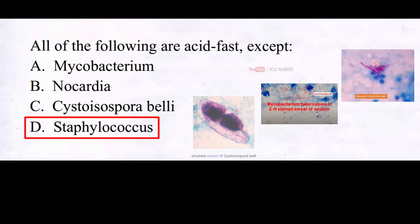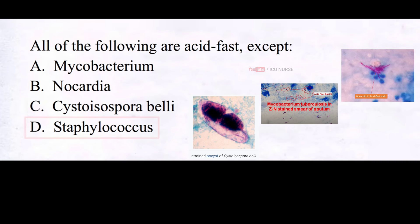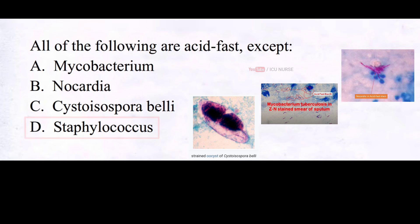Mycobacterium, Nocardia, and Cystoisospora belli are all acid fast, whereas Staphylococcus is not acid fast. Acid fast bacteria like Mycobacterium and Nocardia retain the stain when exposed to acid alcohol, while non-acid fast organisms such as Staphylococcus lose the stain. This staining property is used for identifying bacteria causing diseases like tuberculosis and leprosy.